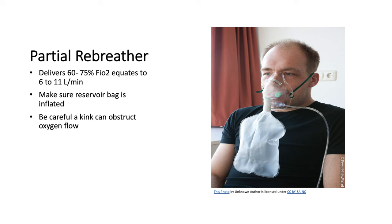Moving on to the partial rebreather. This delivers 6 to 11 liters per minute, which is equivalent to 60 to 75% FiO2. This mask is used when people have very low levels of blood oxygen, as it delivers oxygen quickly to your blood. The setup includes a face mask covering the nose and mouth, inflated with a reservoir bag that has no flaps. The patient will rebreathe one third of exhaled tidal volume. Always make sure the bag is inflated by adjusting the flow rate to meet the patient's oxygen demand, as this bag can kink and obstruct oxygen flow — so monitor and educate the patient.